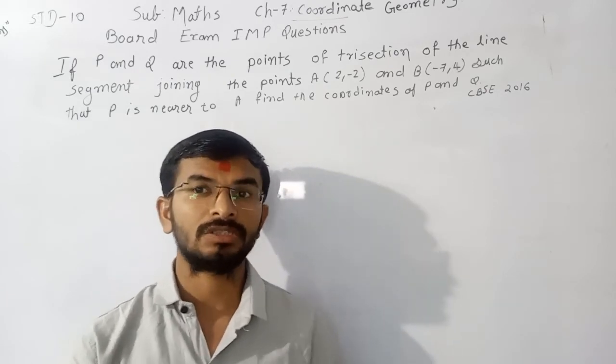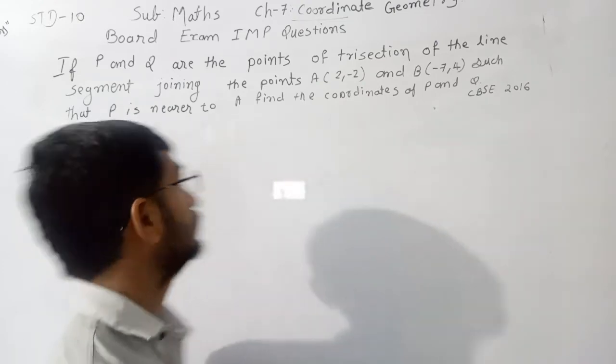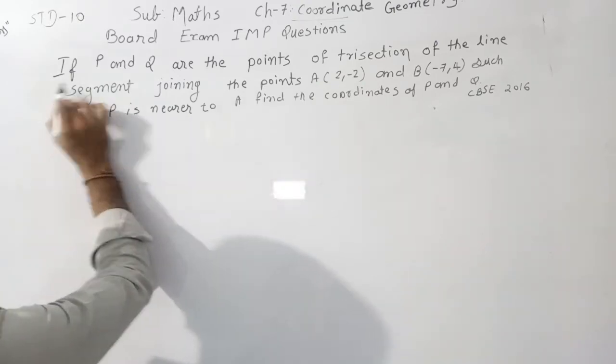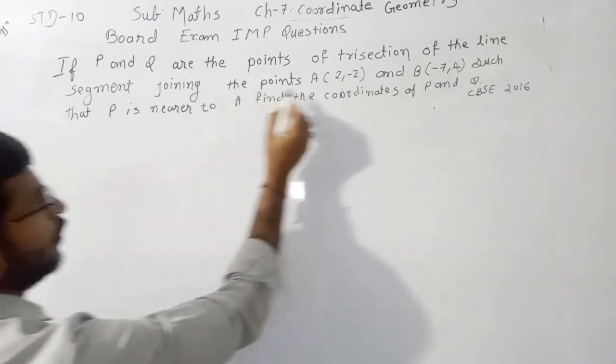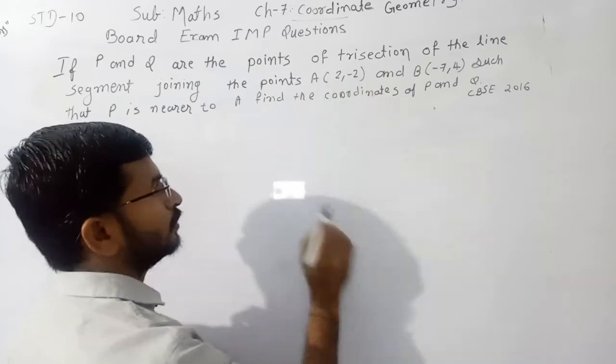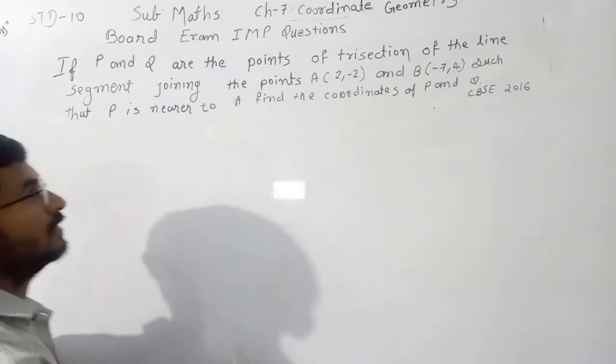We have one question important to ask in CBC 2016 exam. Question is: if P and Q are the points of trisection of the line segment joining the point A(2, -2) and B(-7, 4) such that P is nearer to A, find the coordinates of P and Q.